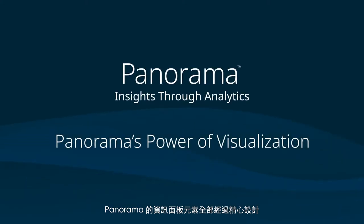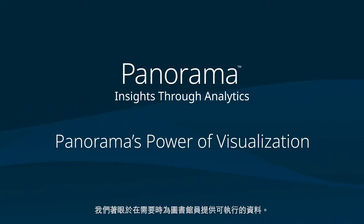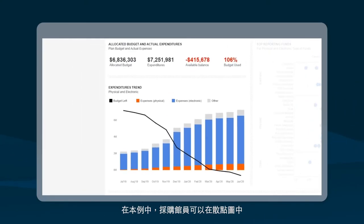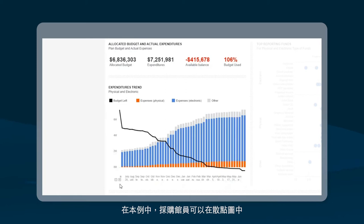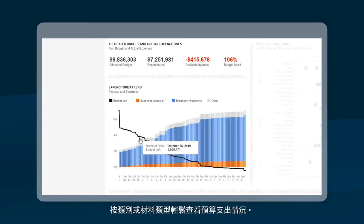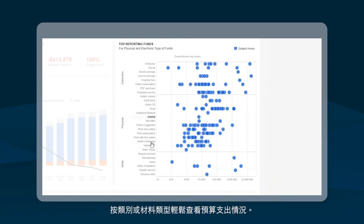Panorama's dashboard elements are all designed with an eye towards giving librarians actionable data exactly at the time of need. In this example, an AUL collections or acquisition librarian can easily see expenditures by category and material type in the scatter plot.